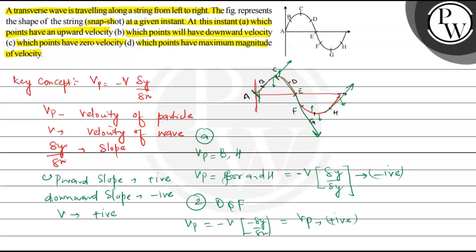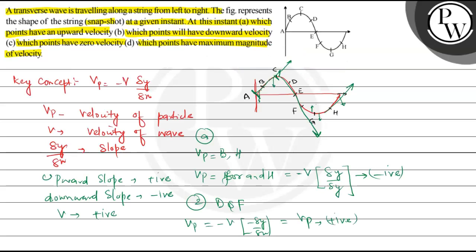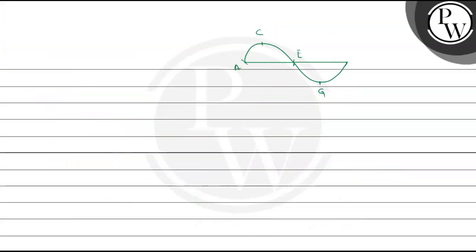So upward and downward velocities are resolved. Now remaining are zero velocity and maximum velocity. Roughly drawing the wave here — marking points A, E, C, G on the wave. The third part of the question asks about zero and maximum velocity. Particles at the mean position have maximum velocity, so A and E are the particles having maximum velocity. For part C, C and G are the particles that have zero velocity.